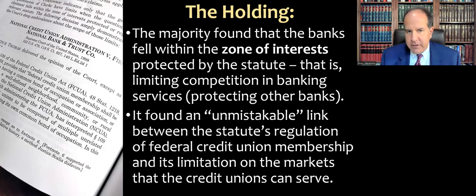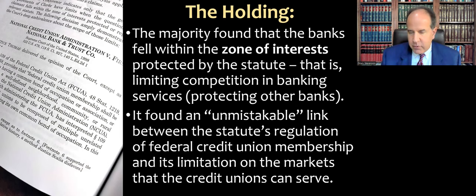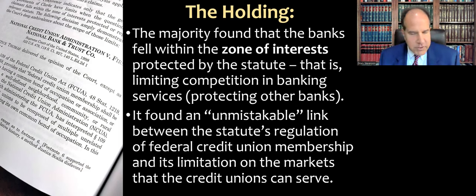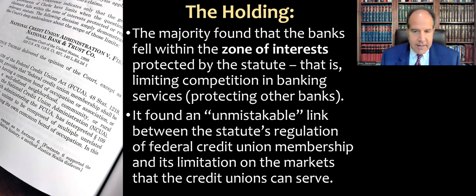Now let's go to the holding. The Supreme Court's majority found that the banks — regular banks like Bank of America or Citibank — fell within the zone of interest protected by the statute. The majority said what Congress was trying to do was to limit competition in banking services, or at least level the playing field, because credit unions don't have quite the same restrictions and regulatory burdens that other banks do. So the statute was originally supposed to limit credit unions, serving a policy goal of protecting other banks from unfair competition.